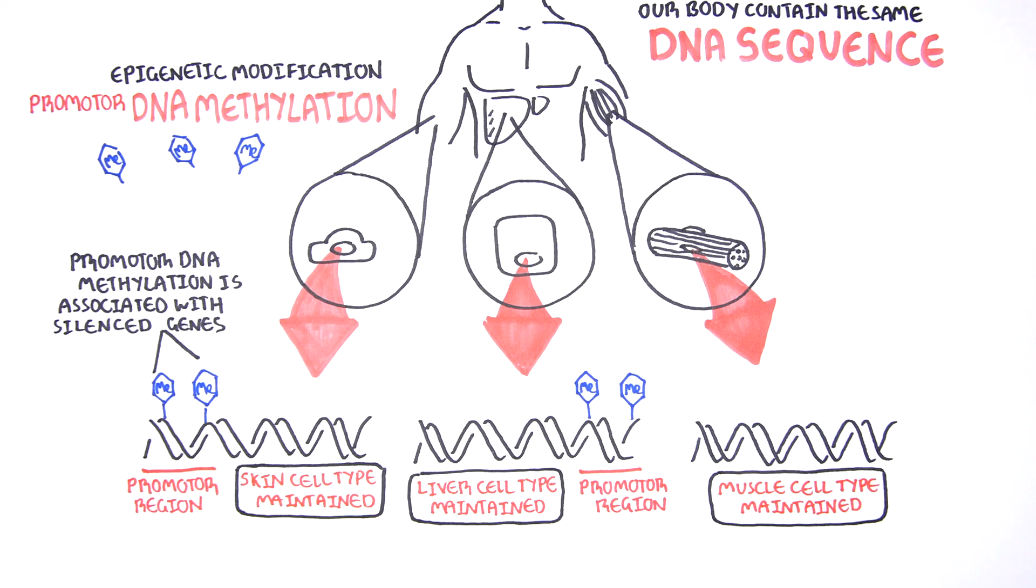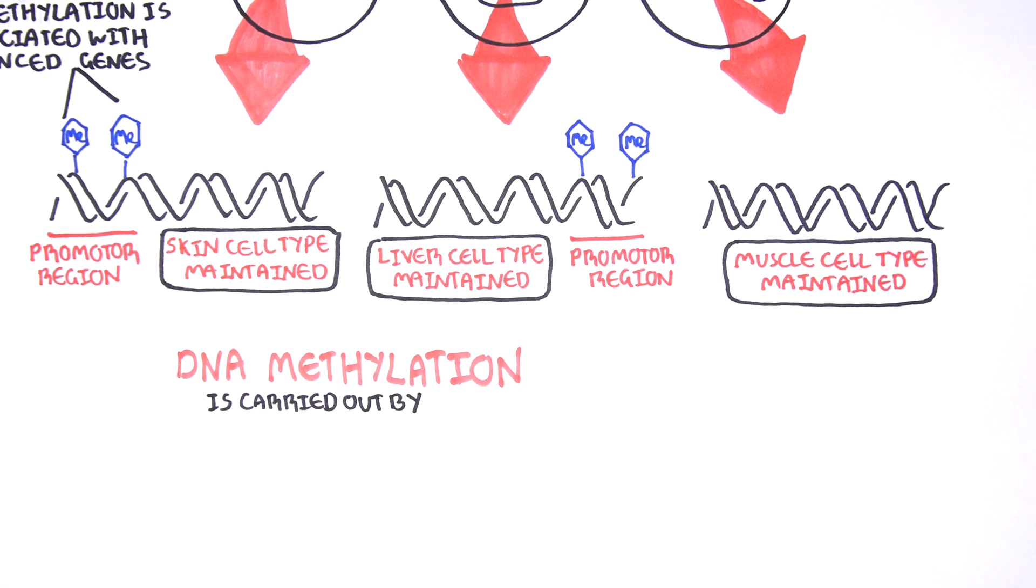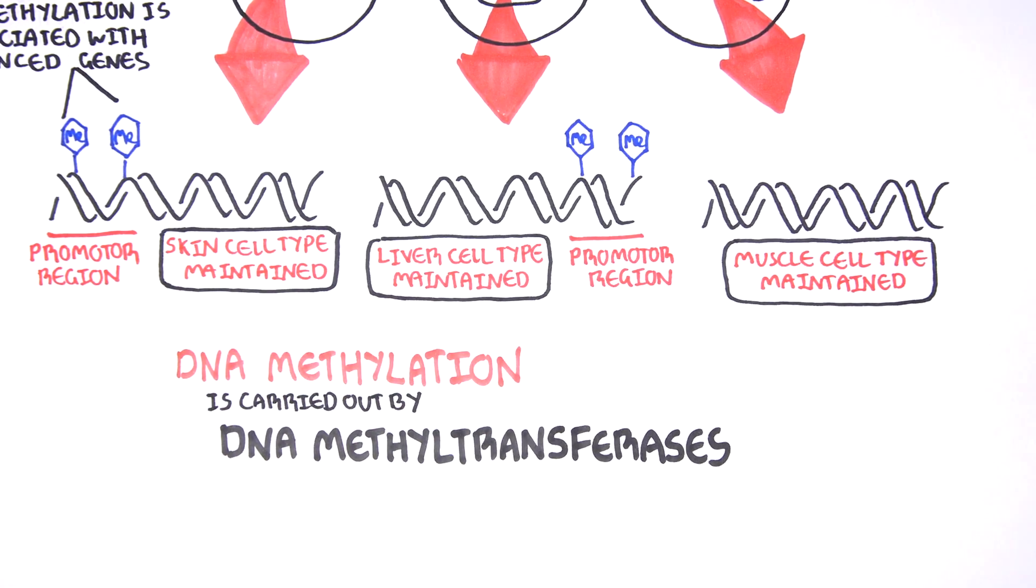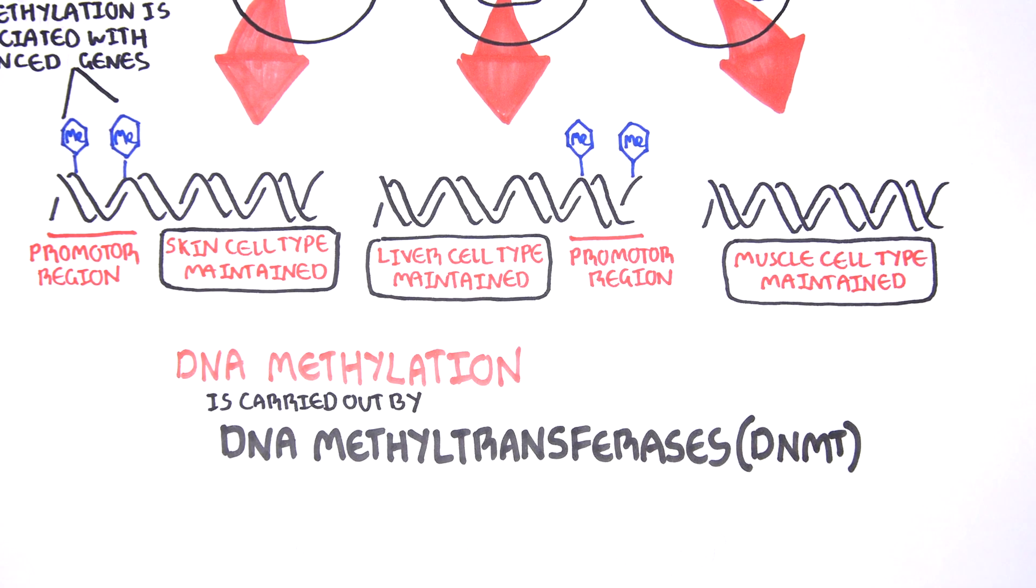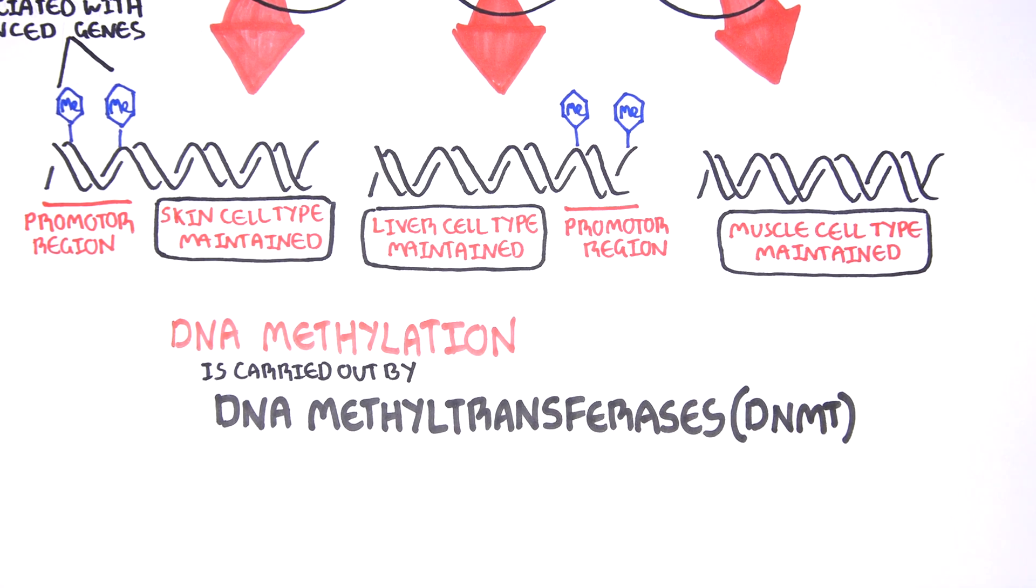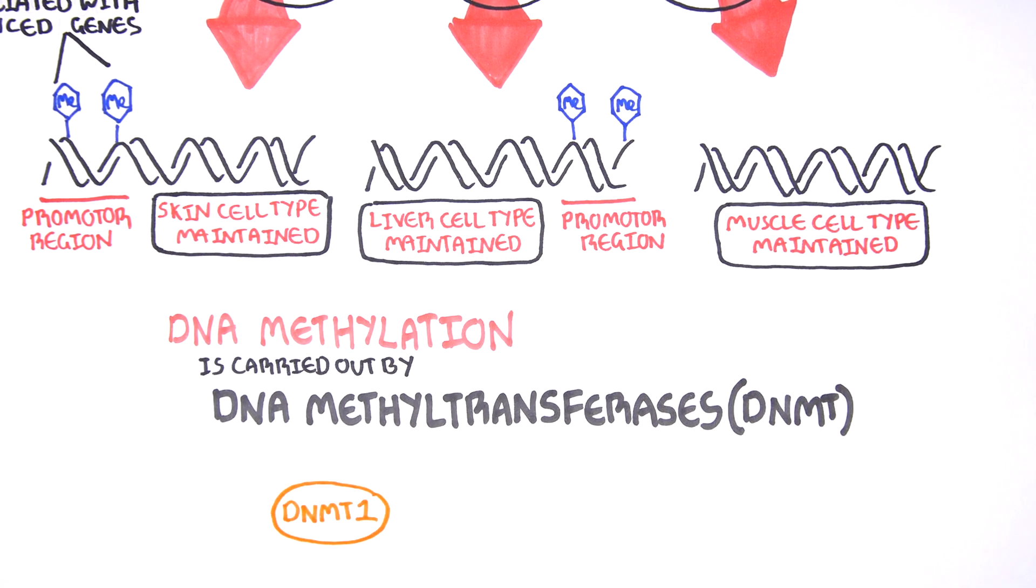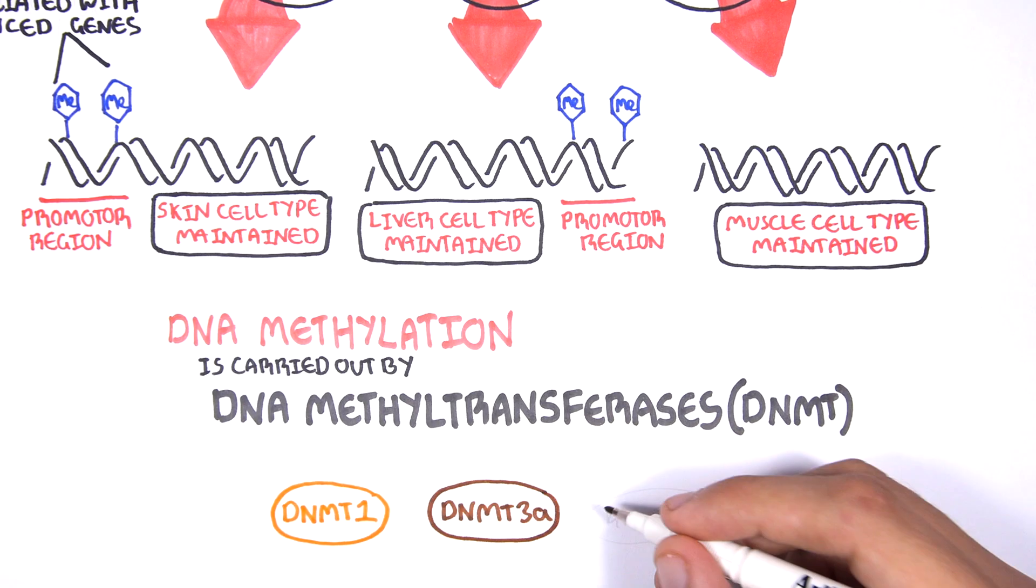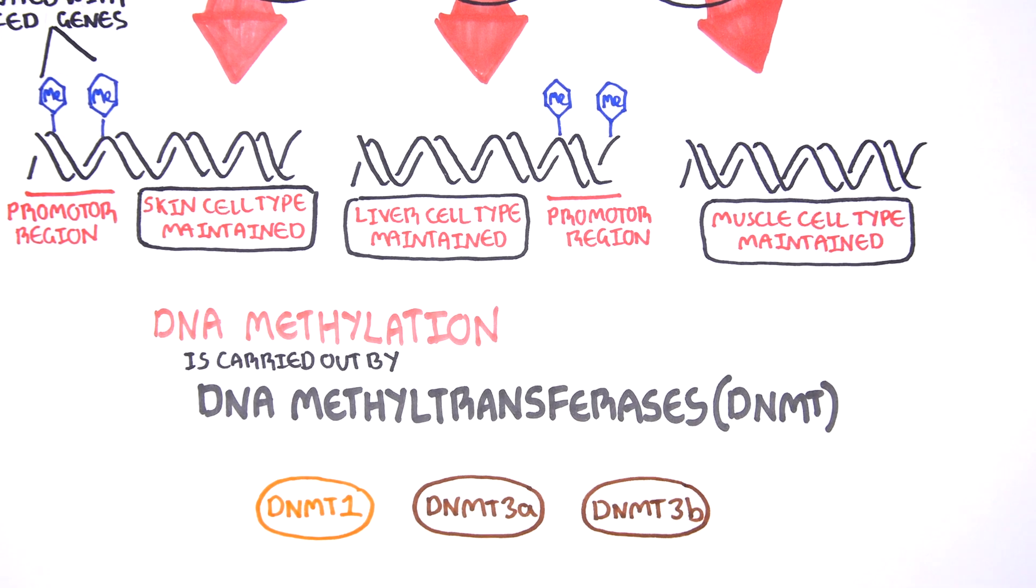DNA methylation is carried out by a group of enzymes known as DNA methyltransferases, or DNMT for short. We have three major types: DNMT1, DNMT3A, and DNMT3B. Let's have a closer look at how they work.